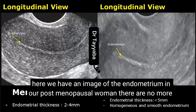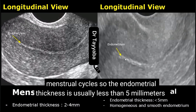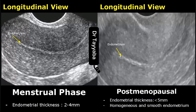Here we have an image of the endometrium in a postmenopausal woman. There are no more menstrual cycles, so the endometrial thickness is usually less than 5 mm.